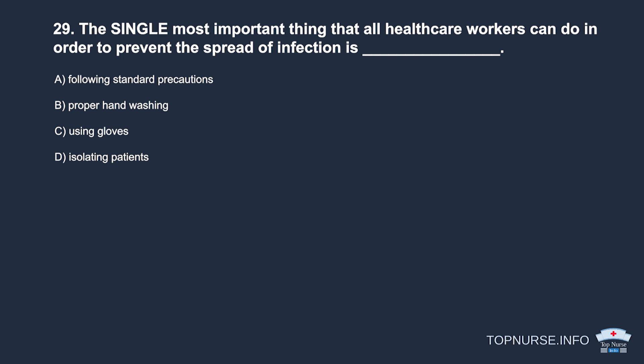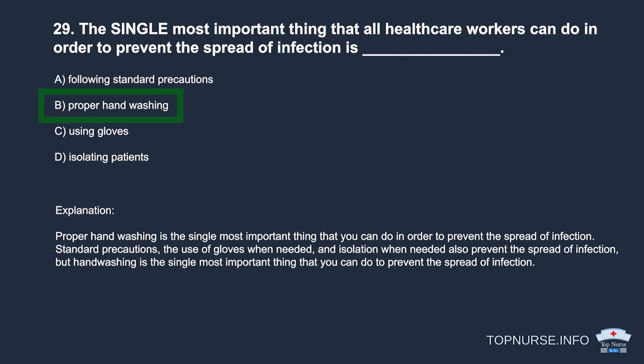Question 29: The single most important thing all healthcare workers can do to prevent the spread of infection is: a. Following standard precautions. b. Proper hand washing. c. Using gloves. d. Isolating patients. Correct answer: b. Proper hand washing. Proper hand washing is the single most important thing you can do to prevent the spread of infection. Standard precautions, gloves, and isolation also help, but hand washing is the most important.